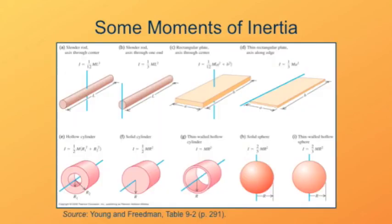There are some examples in your book. Here are some other examples. Probably can't even see most of these, but we can see that there are different formulas for different shapes. Moment of inertia depends on where the axis of rotation is, as well as how the mass is distributed.